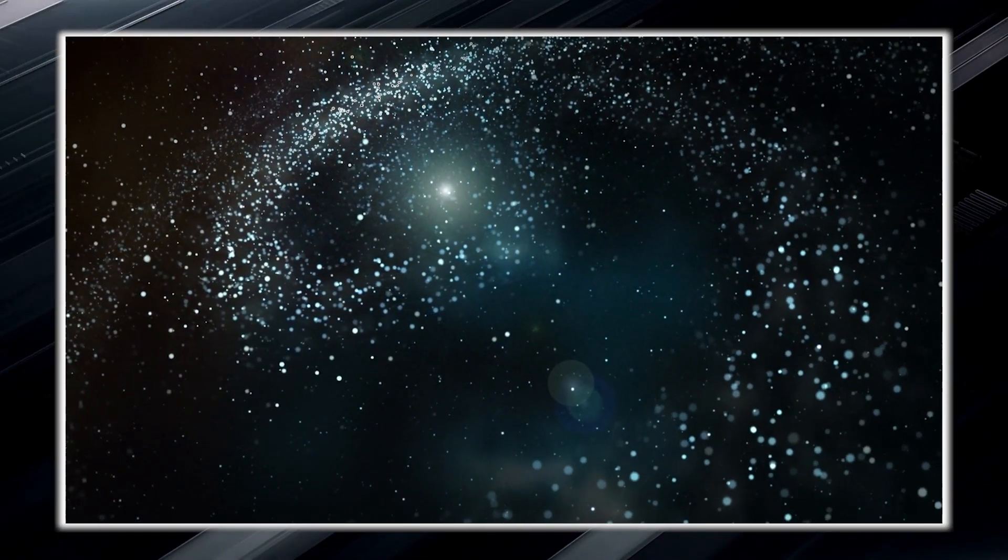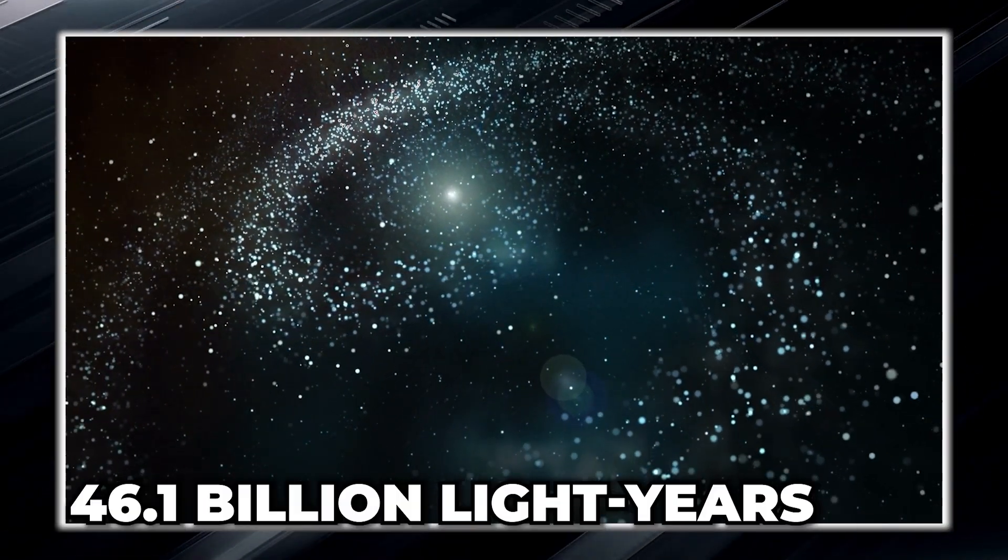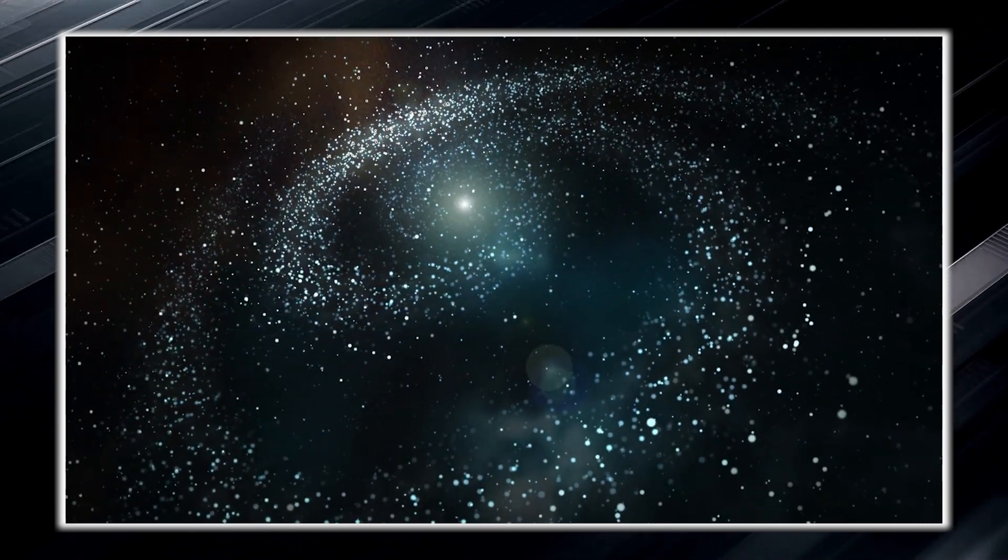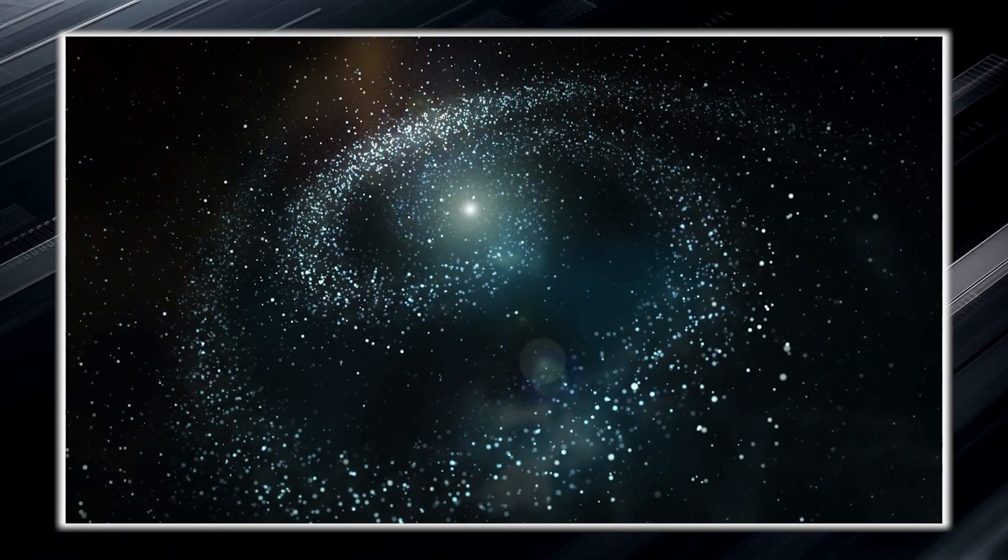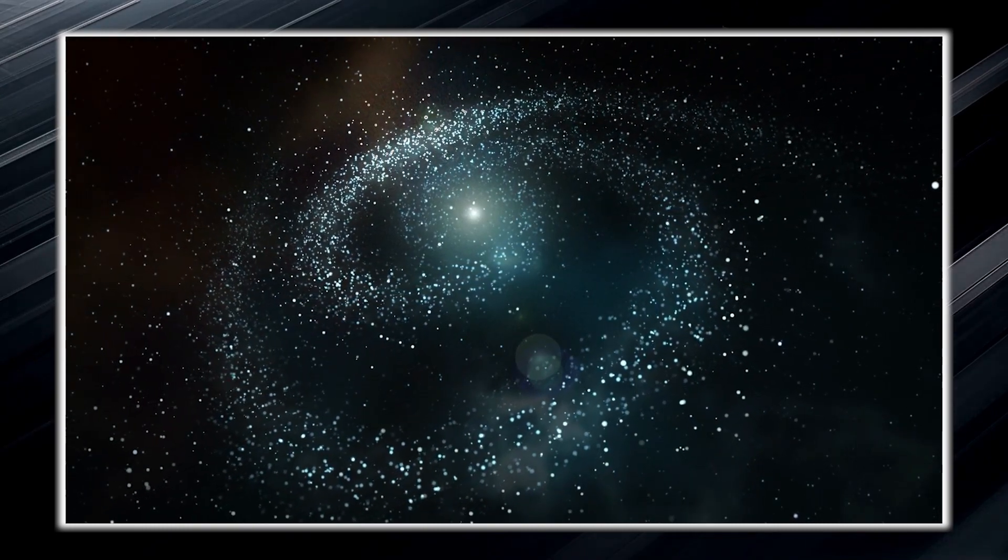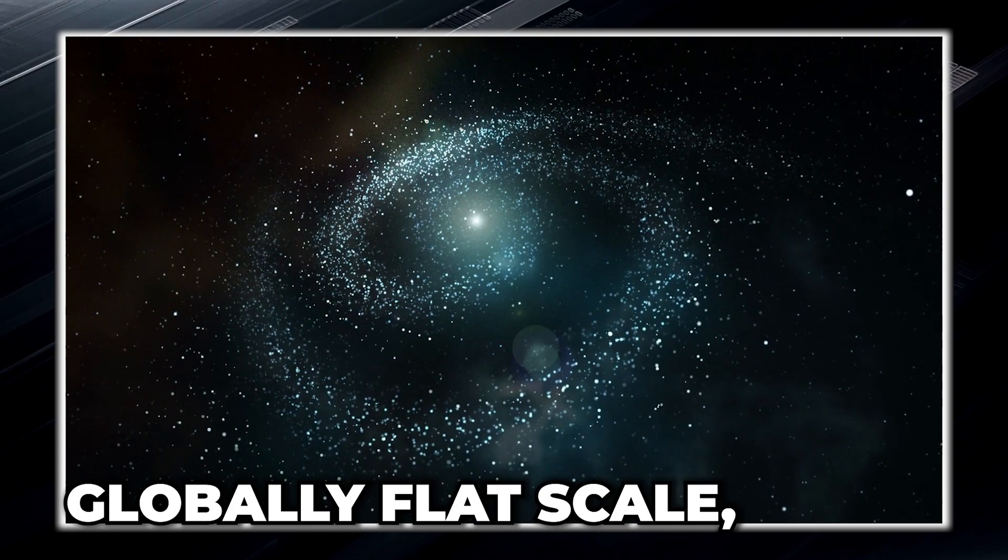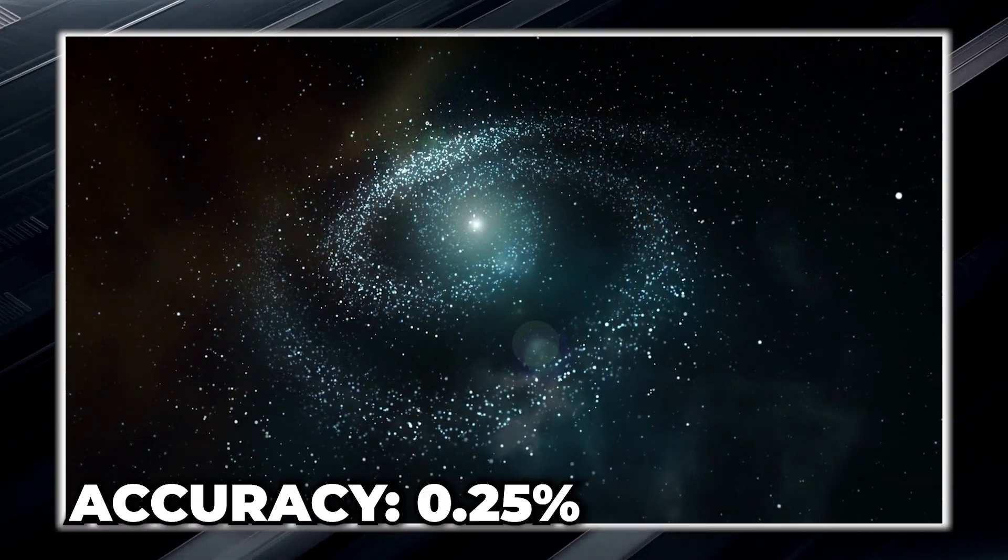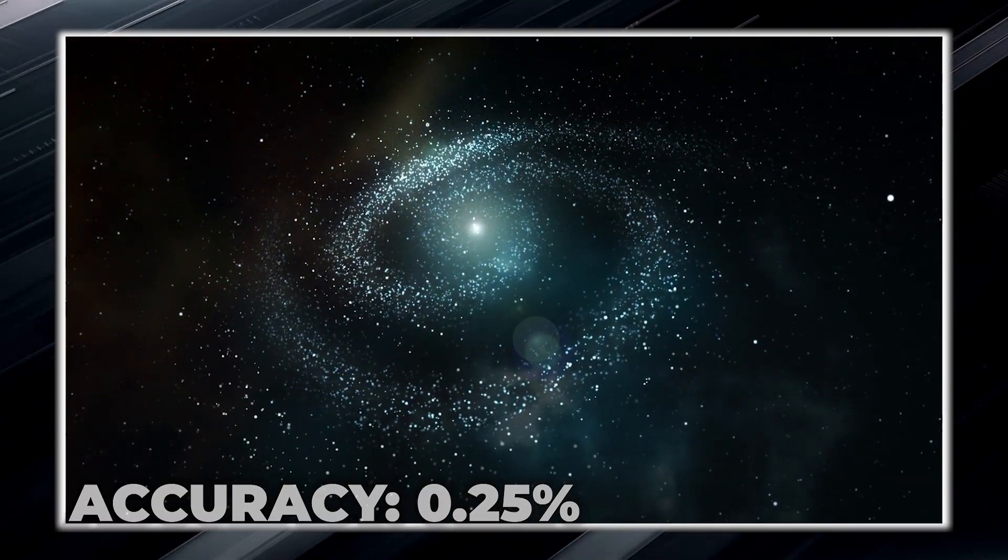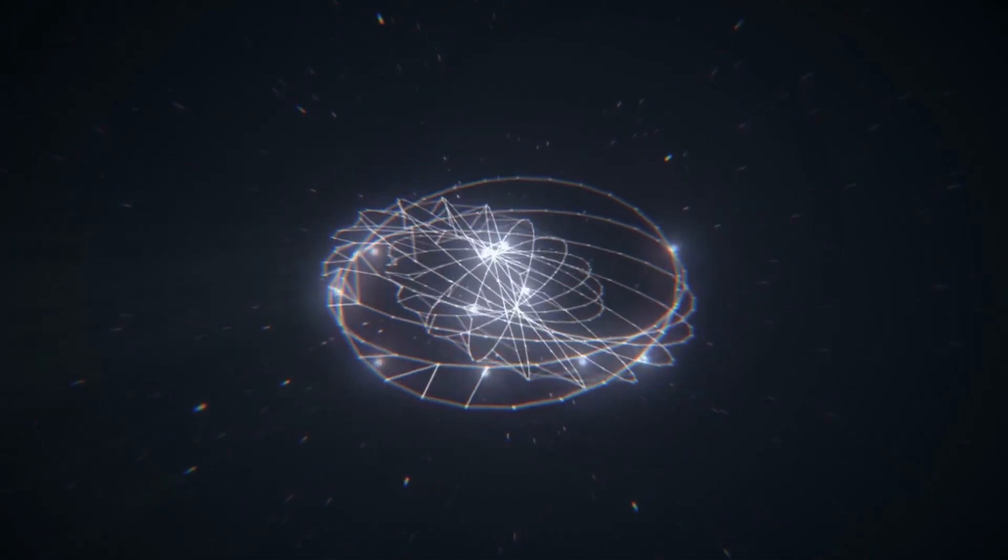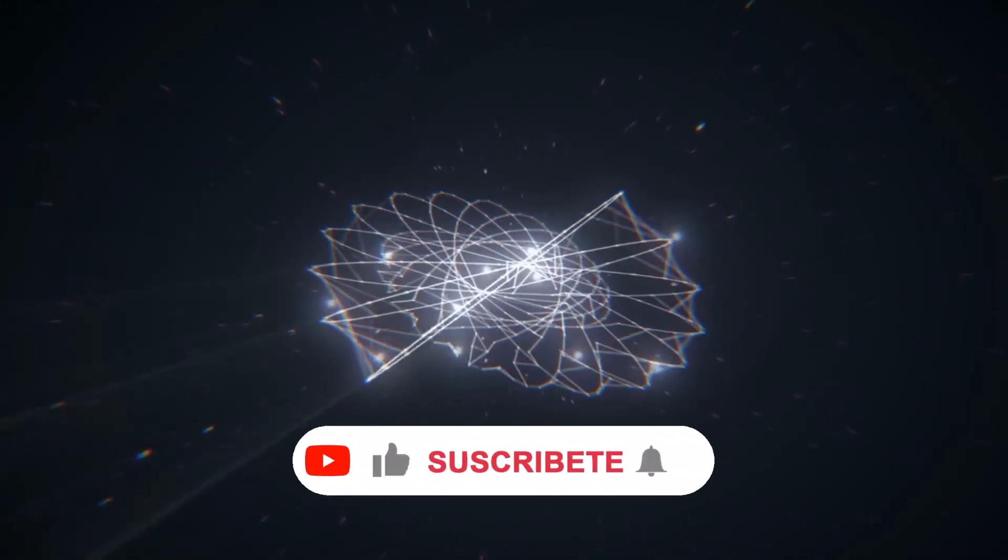The observable universe has a radius of approximately 46.1 billion light years, but there is much more out there that is beyond our ability to observe. Based on observations and our knowledge of physics, scientists have determined that the universe extends on a globally flat scale with a remarkable accuracy of 0.25%. However, there is a possibility that the universe is curved and forms a loop upon itself.